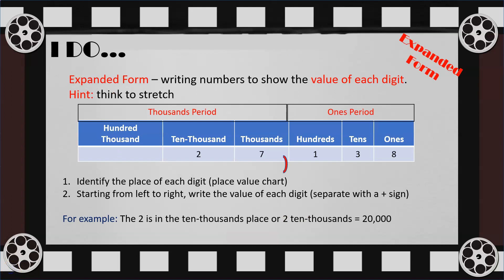Now we're ready to practice writing numbers in expanded form. Using the number 27,138, we're going to represent it in expanded form. Expanded form means writing numbers to show the value of each digit. To do so, it is helpful to place the digits in a place value chart. The ones period has a ones, tens, and hundreds place, while the thousands period has a one thousands, ten thousands, and hundred thousands place. We start from left to right, writing the value of each digit and separating each with a plus sign.